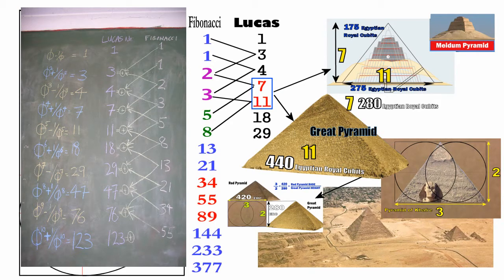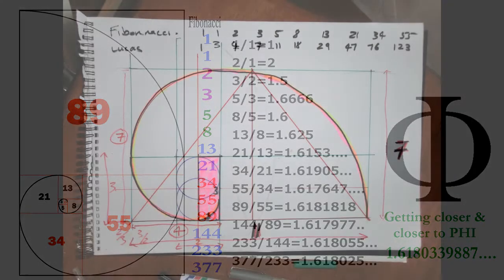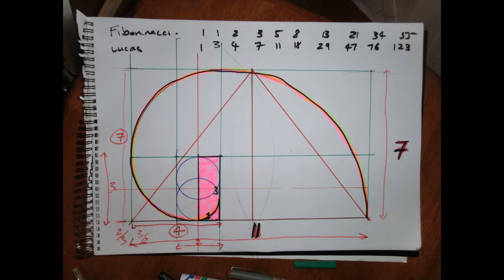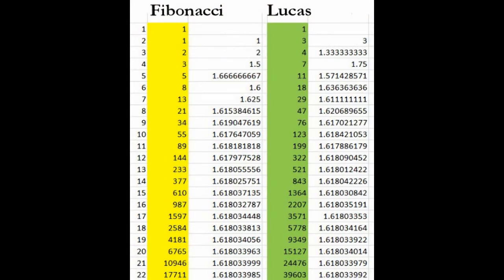The Fibonacci to begin with is just an elegant point of connections between them, but so is the Lucas numbers. For instance, the Great Pyramid 7 high to 11 wide, this is also the Meidum pyramid. The Fibonacci and Lucas numbers connect, but especially the phi ratio which emerges from them. As we divide the larger by its smaller neighbor, it gets closer and closer to this phi ratio.